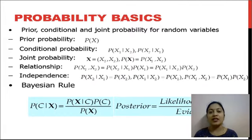Prior probability is the probability of P — it is a fixed probability, which is the prior probability. For conditional probability, we have the probability of two variables: probability of x1 given x2, or probability of x2 given x1.